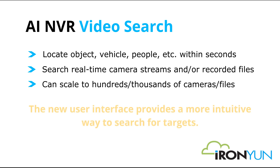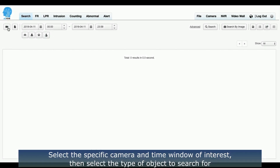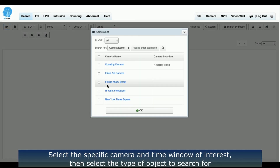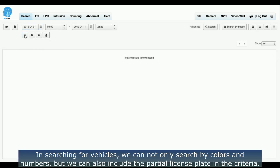In this video, we will demonstrate the new user interface of our video search function, which provides a more intuitive way to search for targets. First, select the specific camera and time window of interest, then select the types of objects to search for.